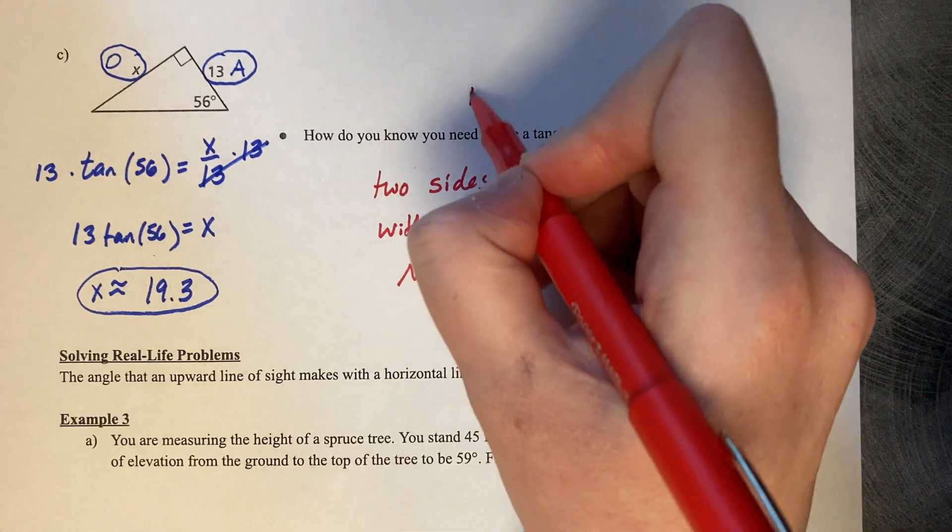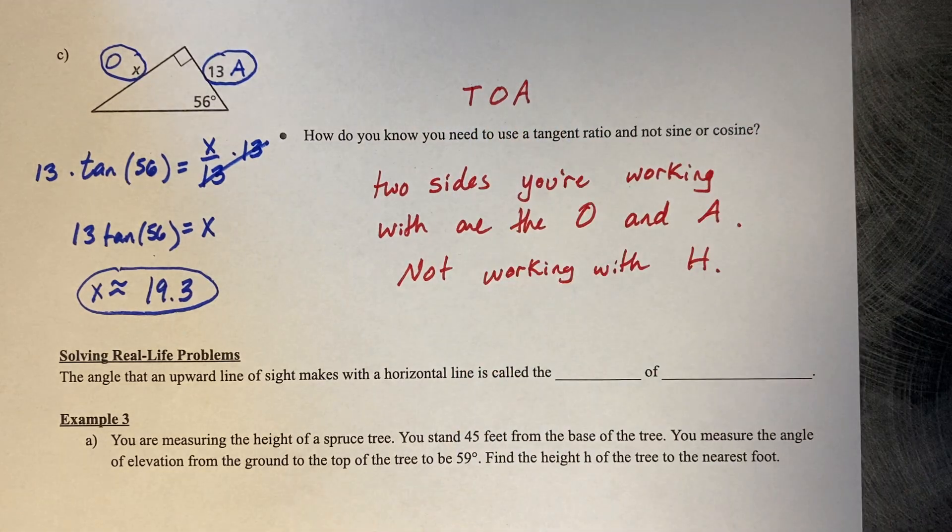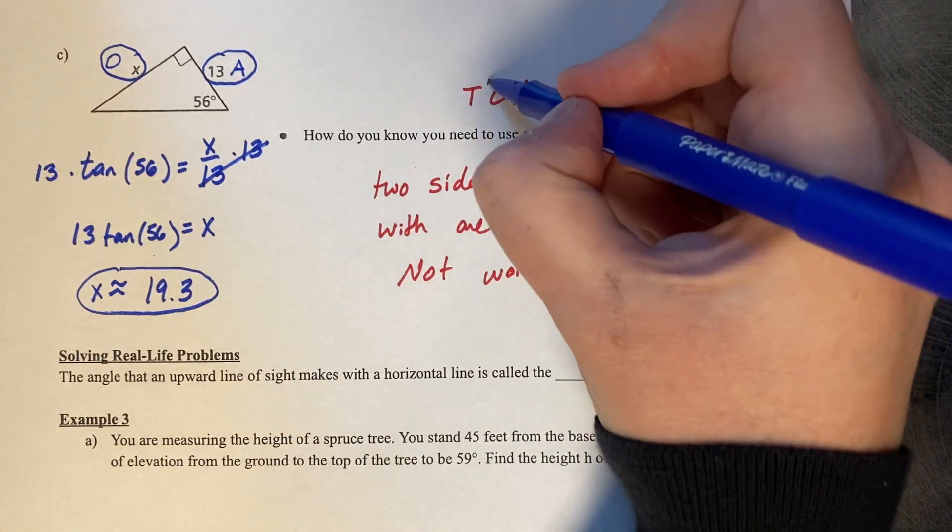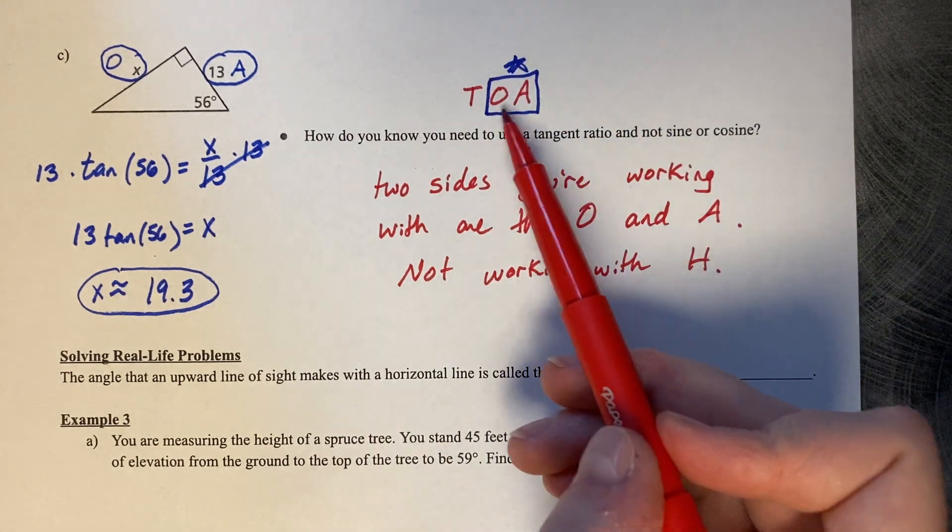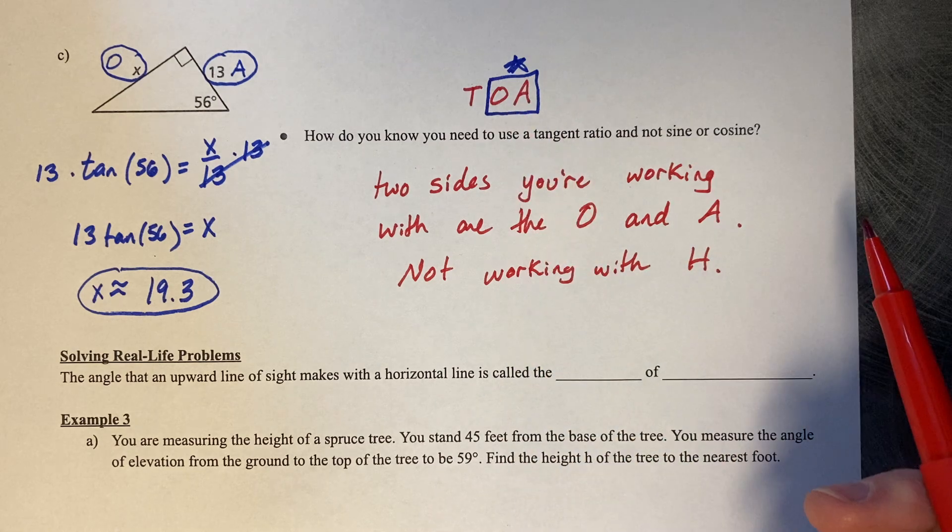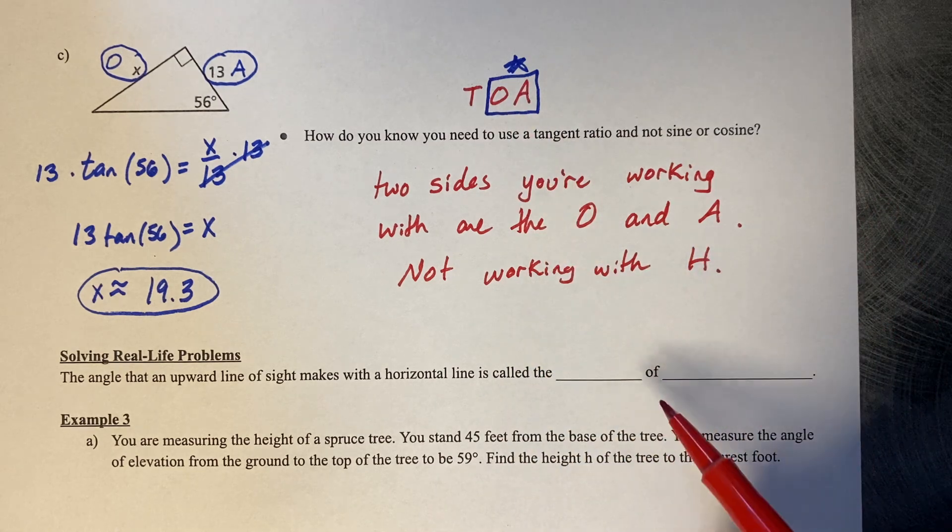Remember, the TOA part of the trig ratio, you're really looking at these second two letters and determining that you're working with an O and an A, and you're not working with an H. No H.